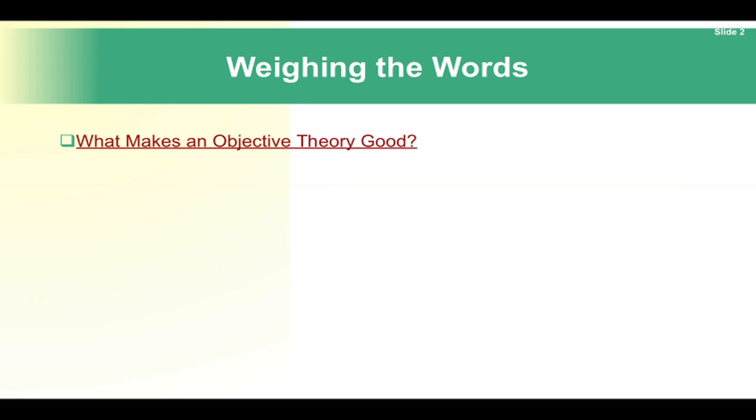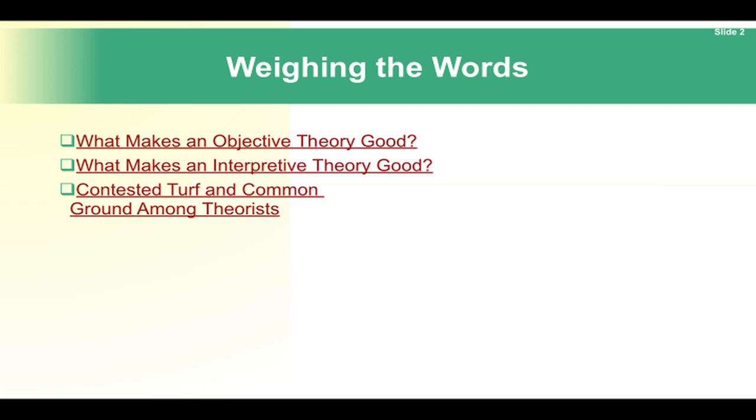Here's where we're going. What makes an objective theory good? What makes an interpretive theory good? What's the contested turf and common ground among theorists?